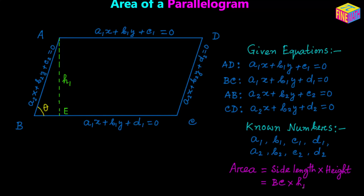Now finding H₁ is easy because it's the distance between two parallel lines whose equations have been provided. But finding the length of BC is going to be a little bit tricky. What I am going to do is extend side DC a little bit and then drop a perpendicular from point B onto the extended DC line. Let's assume the perpendicular lands on point F on the extended DC. We denote the length of BF as H₂, which is the distance between the two parallel sides AB and CD.